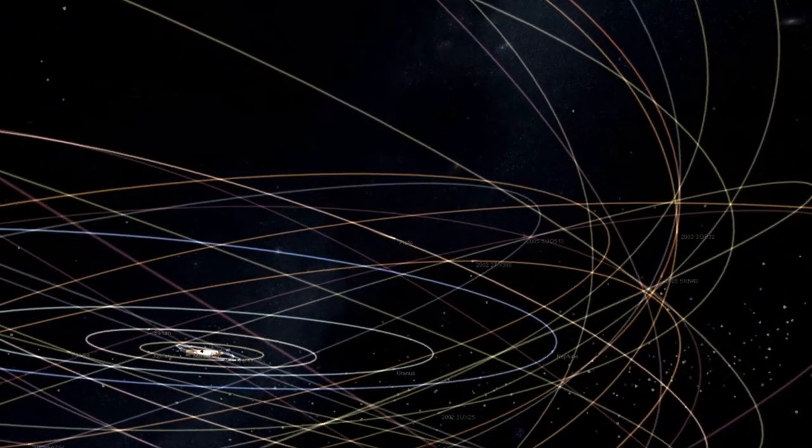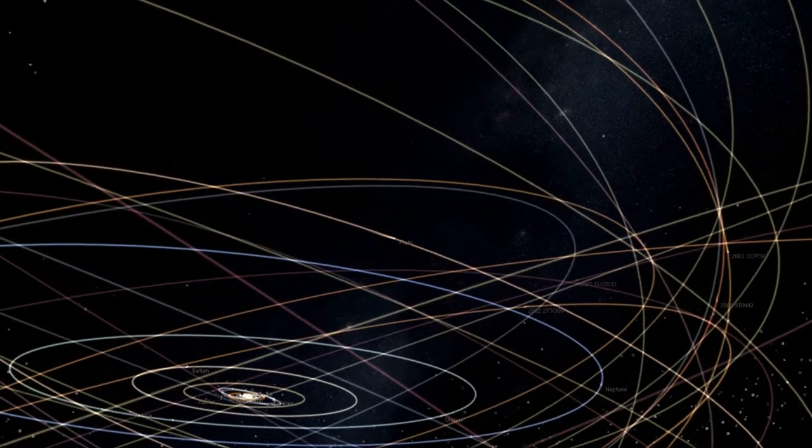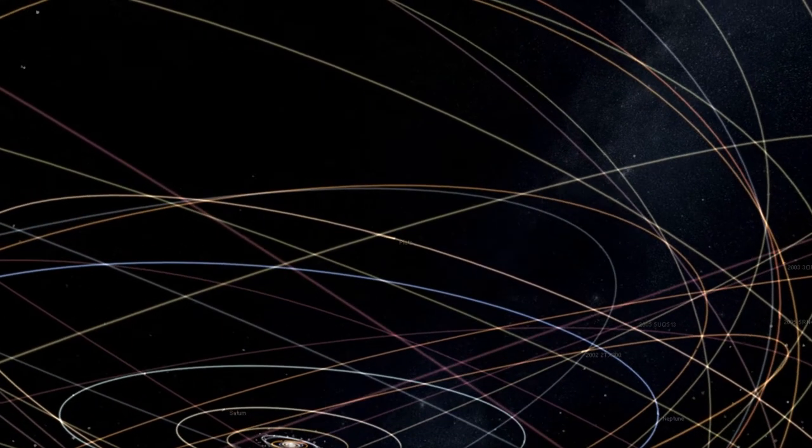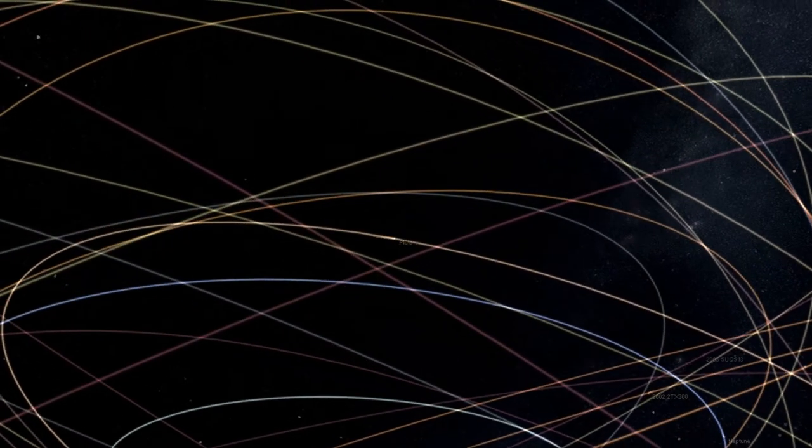Pluto can never crash into Neptune because for every three laps Neptune takes around the Sun, Pluto makes two.